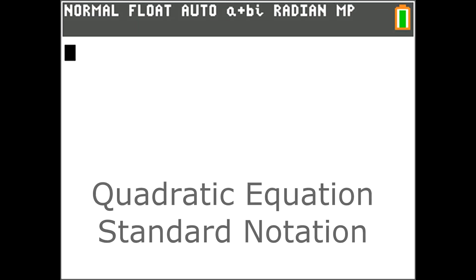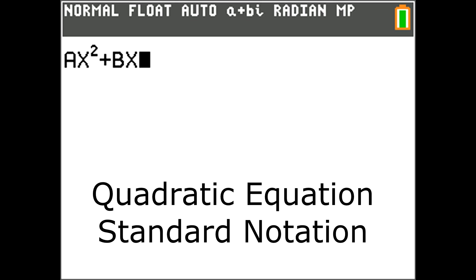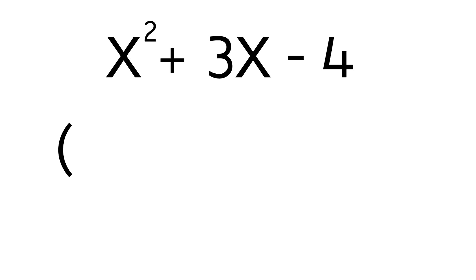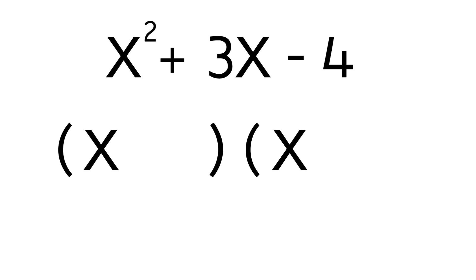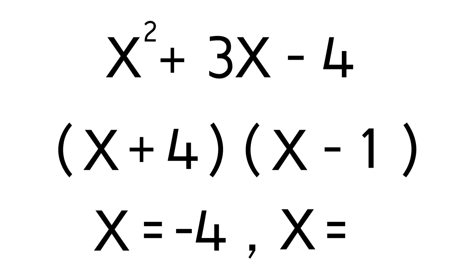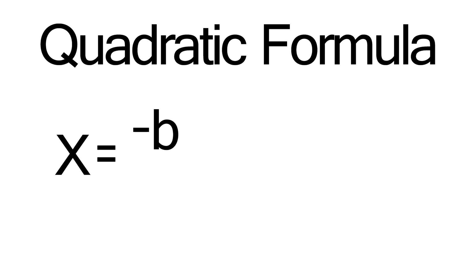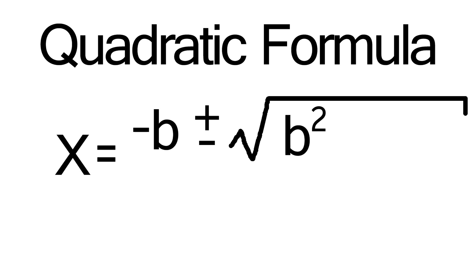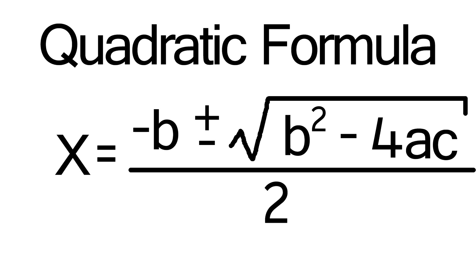Remember, a quadratic equation is in the form of AX squared plus BX plus C. To solve for X on a quadratic equation, we usually factor the equation. However, sometimes the quadratic is too difficult to factor, so we use the quadratic formula, which is X equals negative B plus or minus the square root of B squared minus 4AC, all over 2A.